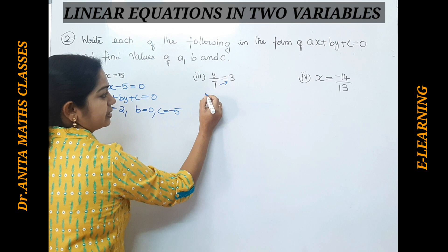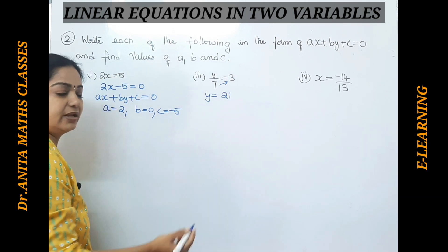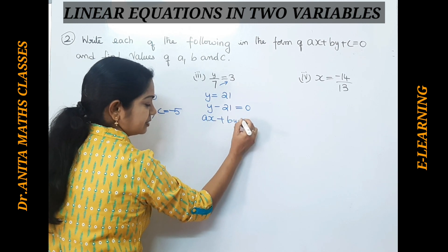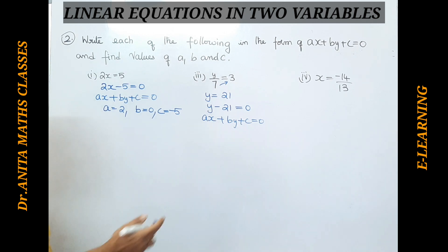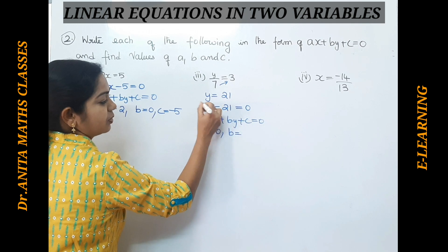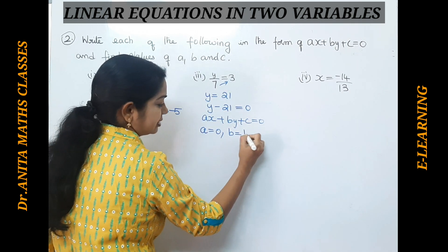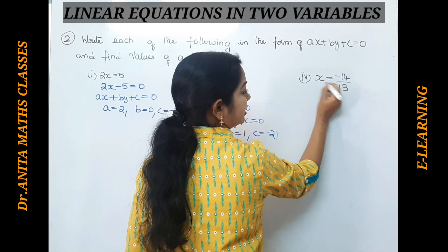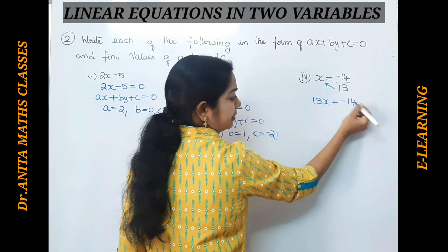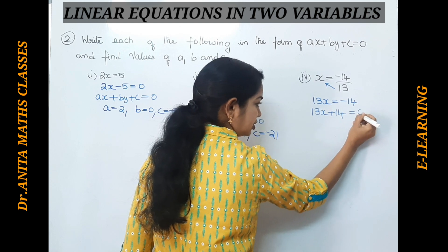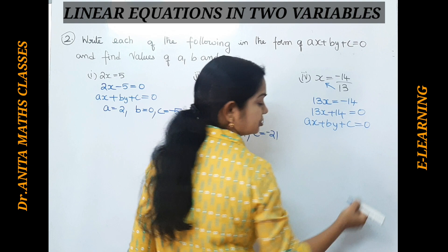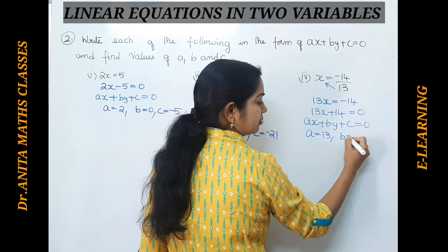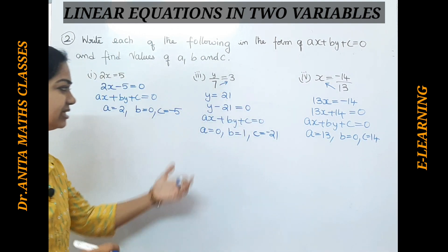For the next bit, cross-multiplying gives y = 7·3 = 21. Bringing the constant to the other side: y − 21 = 0. Comparing with ax + by + c = 0, we don't have an x term, so a = 0. The coefficient of y is 1, so b = 1, and c = −21. Moving to the fourth one: cross-multiplying gives 13x = −14. Bringing the constant inside: 13x + 14 = 0. Comparing, a = 13, b = 0, and c = 14.